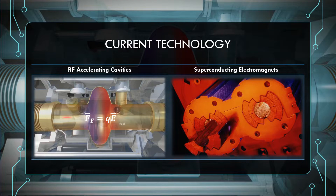Quadrupole magnets consist of four symmetrically arranged magnetic poles. This configuration generates a magnetic field that is focusing in one axis but not the other. To overcome this, accelerators are built with many quadrupole magnets which alternate between vertically focusing and horizontally focusing configurations. Spaces between them are necessary to ensure the magnetic fields don't cancel each other out. Dipole magnets consist of two magnetic poles which generate a magnetic field oriented to exert a centripetal force on the beam as it passes through, making the beam follow a circular path.